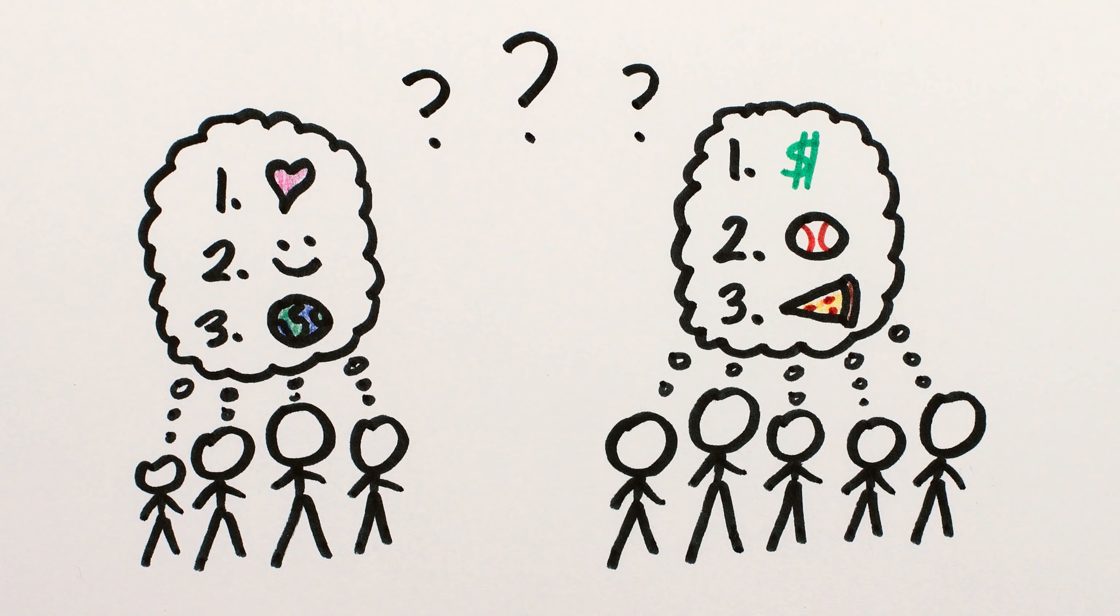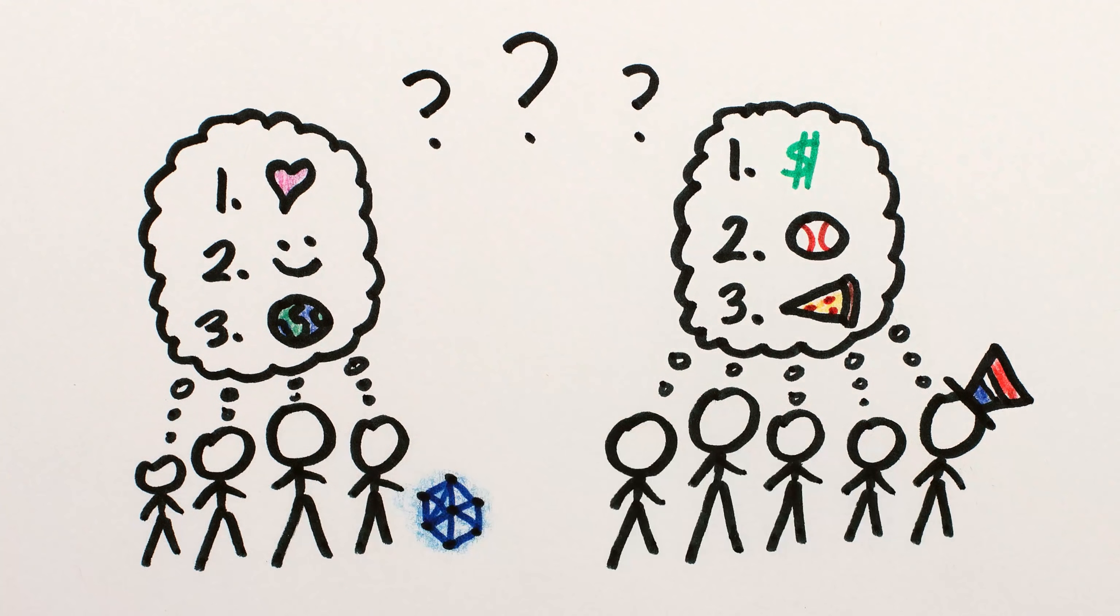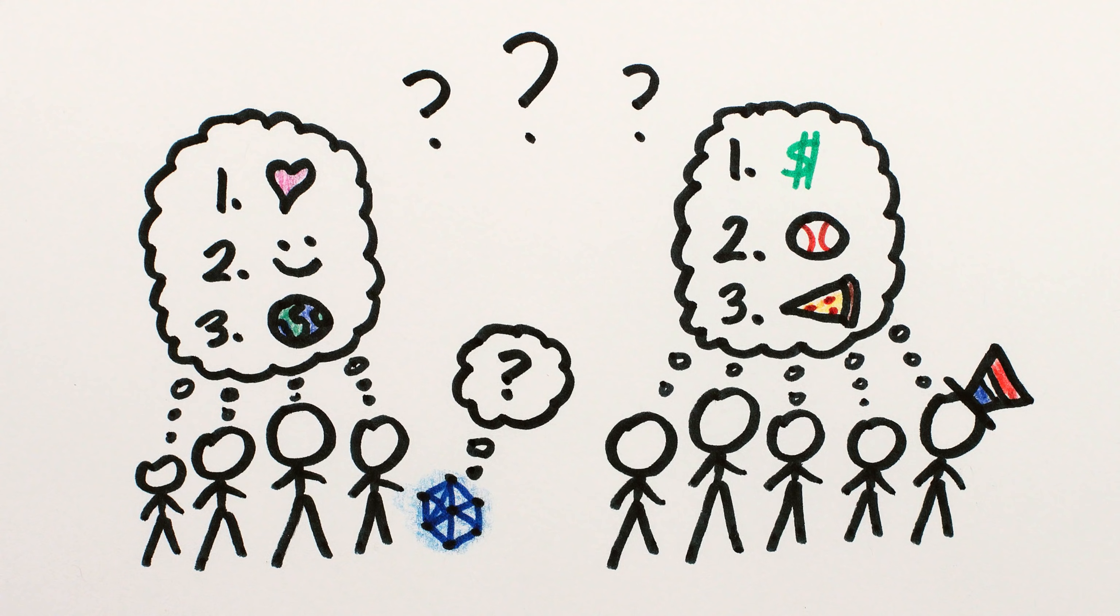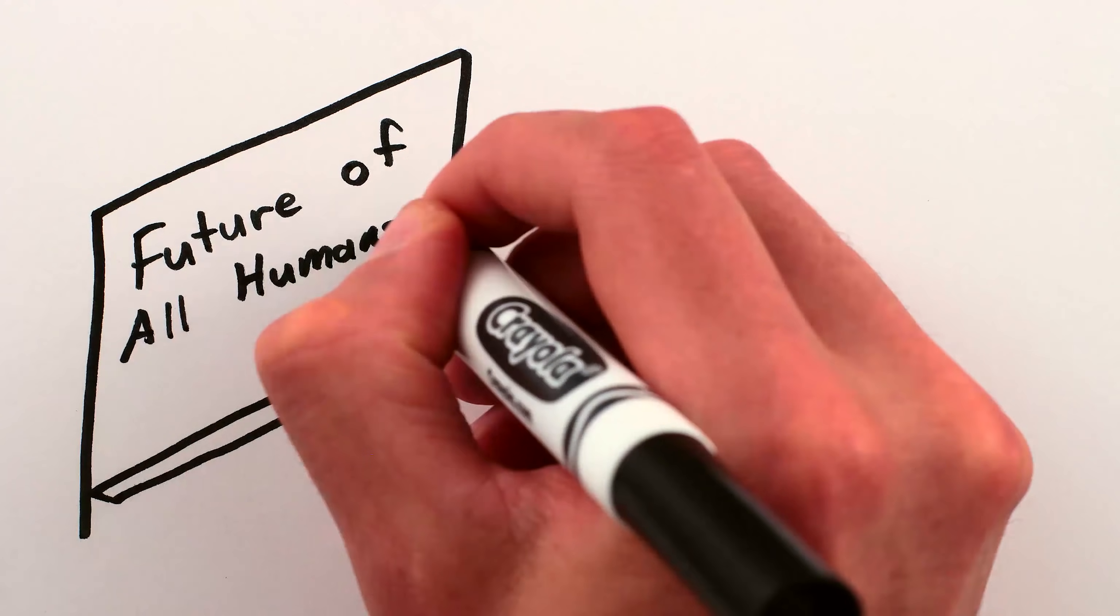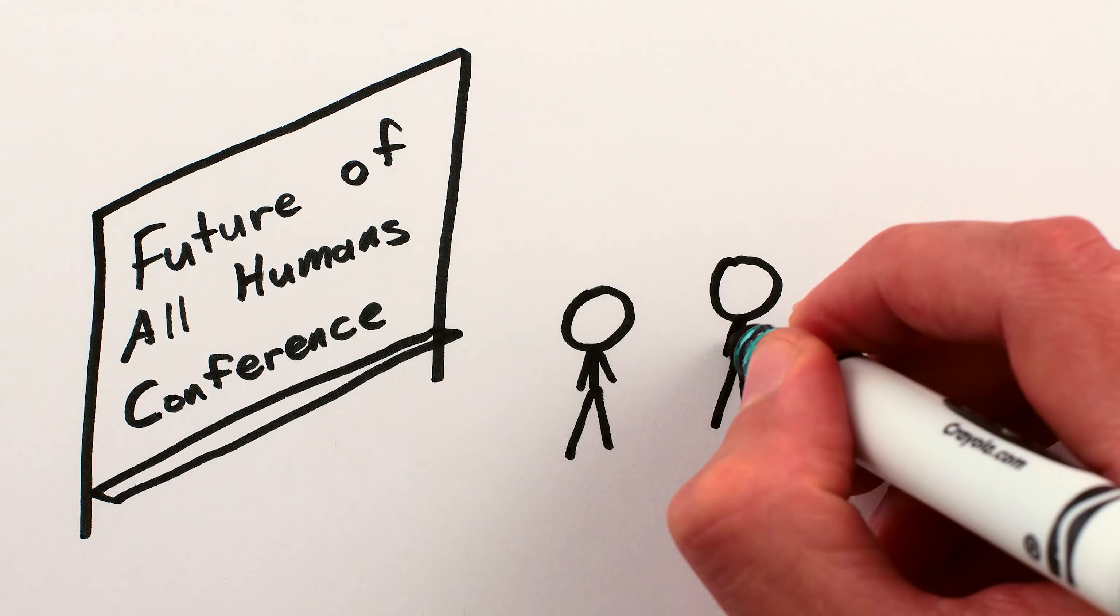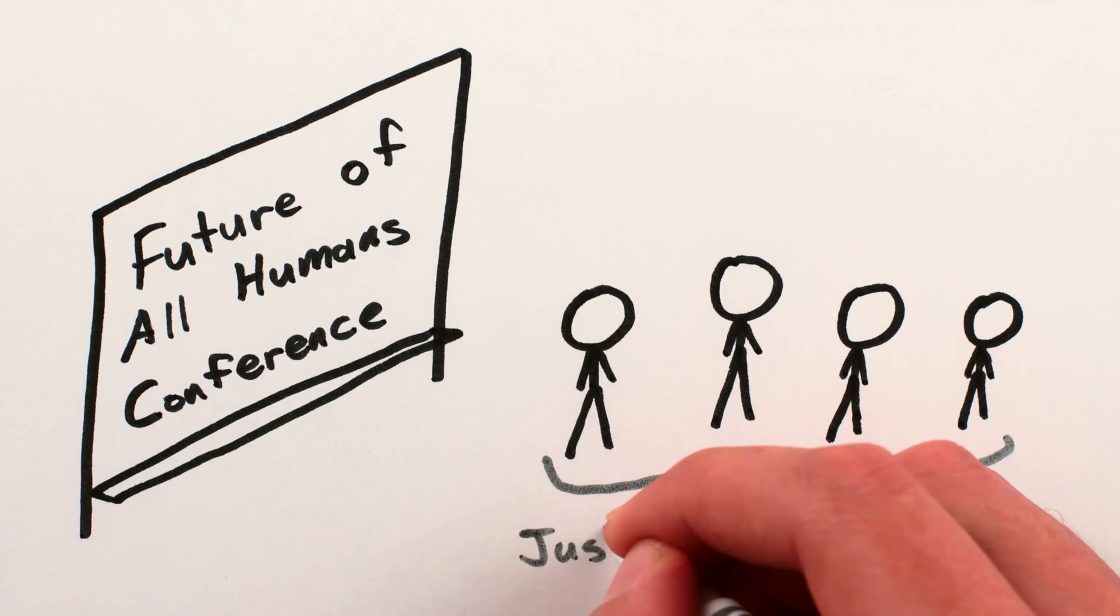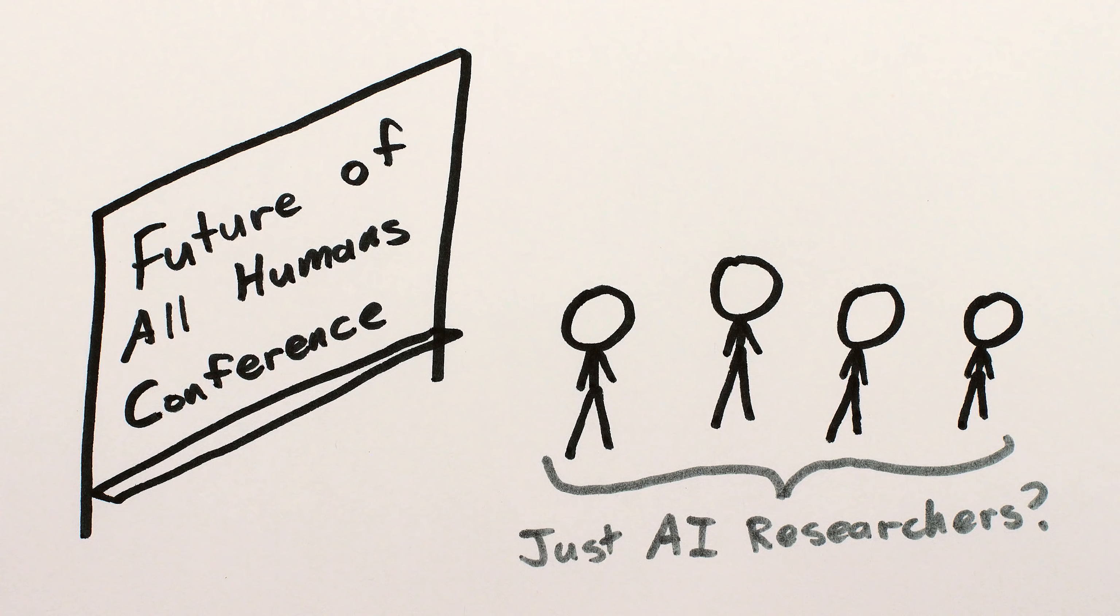Should we vote on what the machine's goals should be? Should we do whatever the president wants? Whatever the creator of the super-intelligence wants? Let the AI decide? In a very real way, the question of how to live with super-intelligence is a question of what sort of future we want to create for humanity, which obviously shouldn't just be left to AI researchers, as caring and socially skilled as we are.